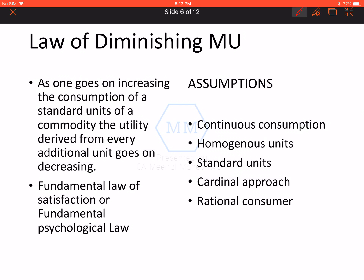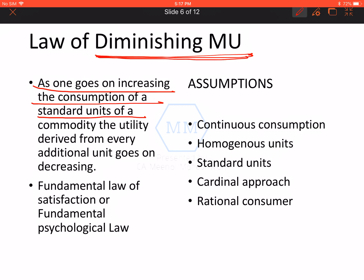Now let's start with a very important law given by Alfred Marshall — the Law of Diminishing Marginal Utility. As we increase our commodity consumption, the satisfaction derived from every additional unit gets reduced. It refers to: as one goes on increasing the consumption of a standard unit of a commodity, the utility derived from every additional unit goes on diminishing.